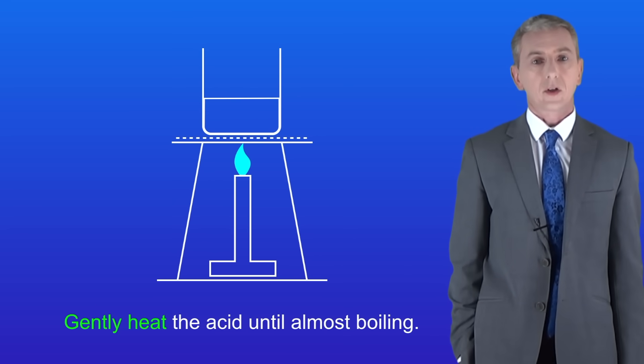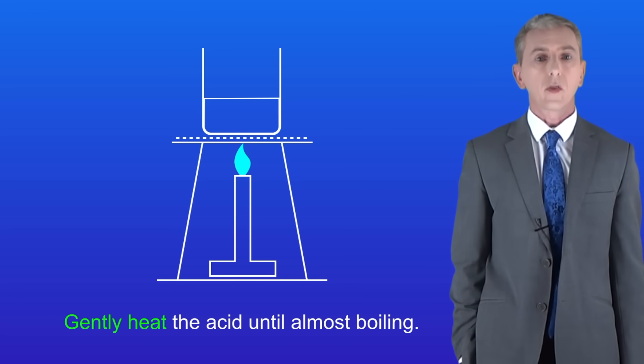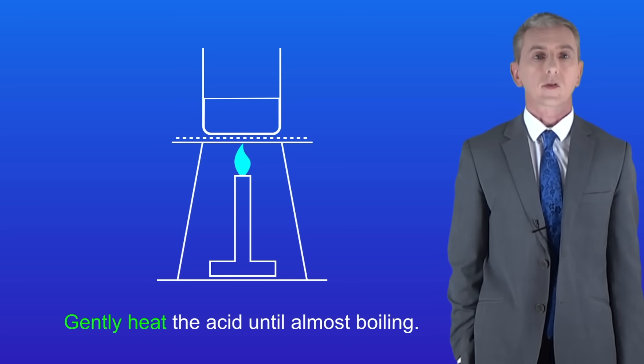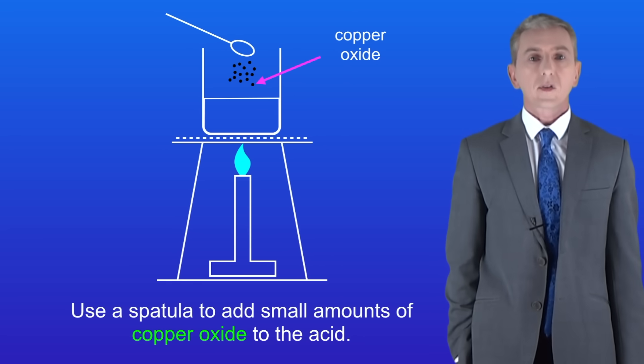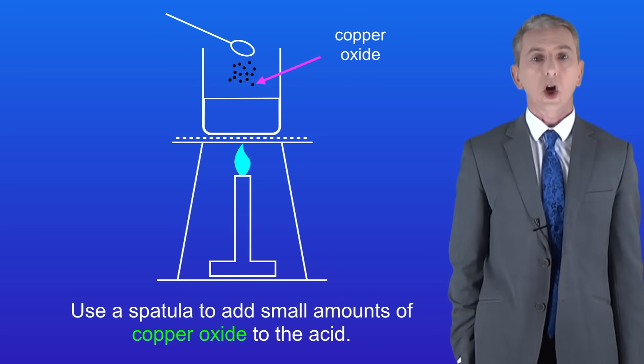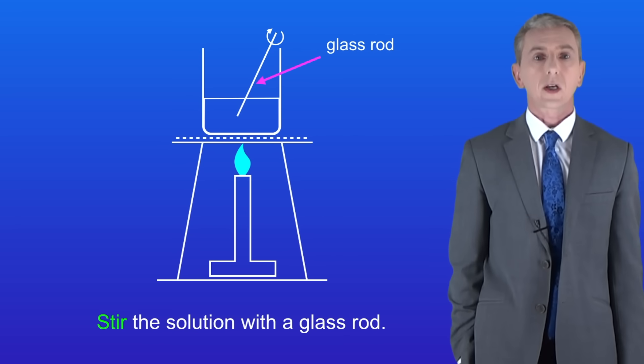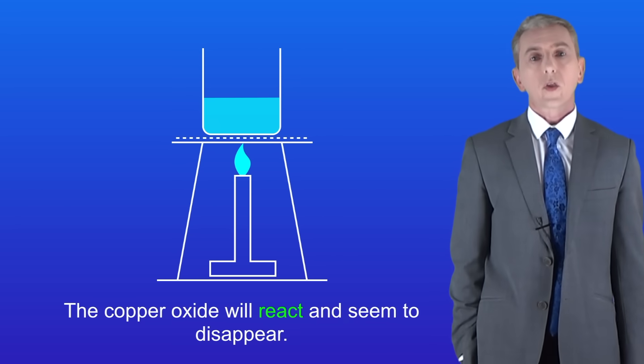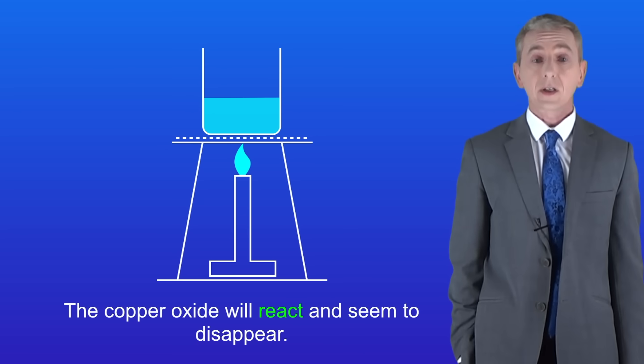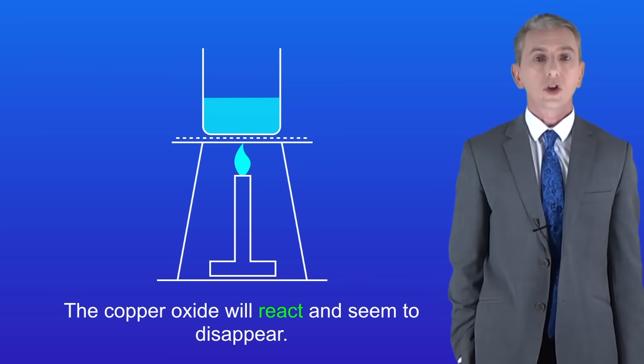Now we gently heat the acid until it's almost boiling. However we do not want it to boil as it could bubble over when we add our other reactant and that would be dangerous. Now using a spatula we add small amounts of copper oxide to the acid. We then stir the solution using a glass rod. The copper oxide will react and seem to disappear. This solution will turn a blue colour which is the colour of copper sulphate.